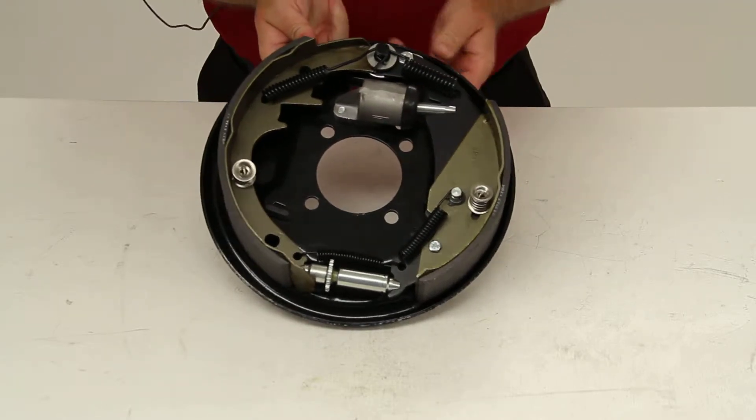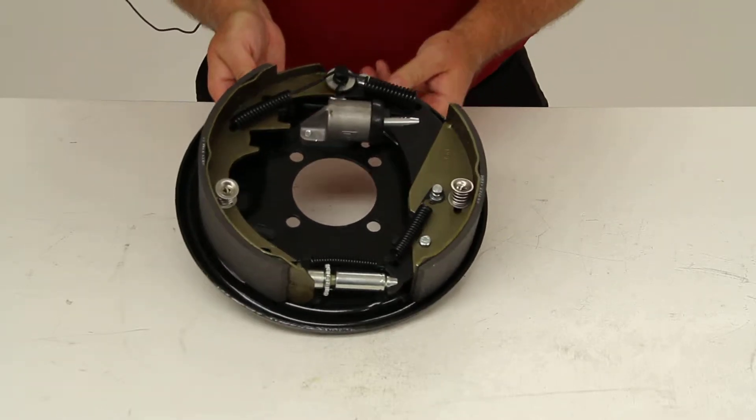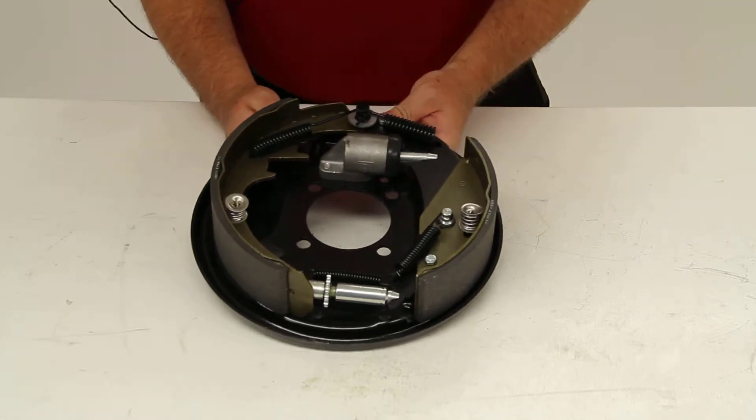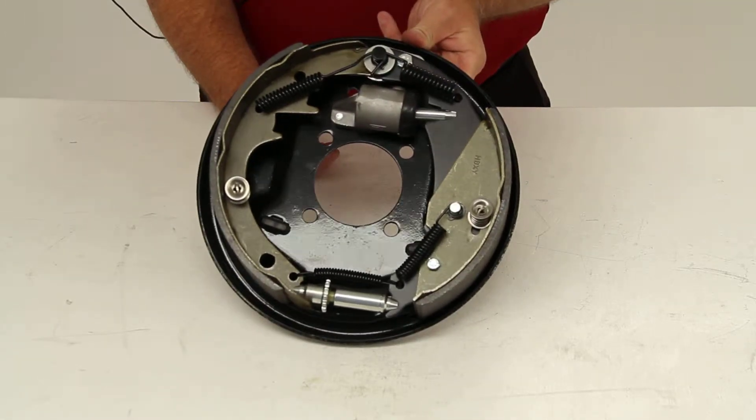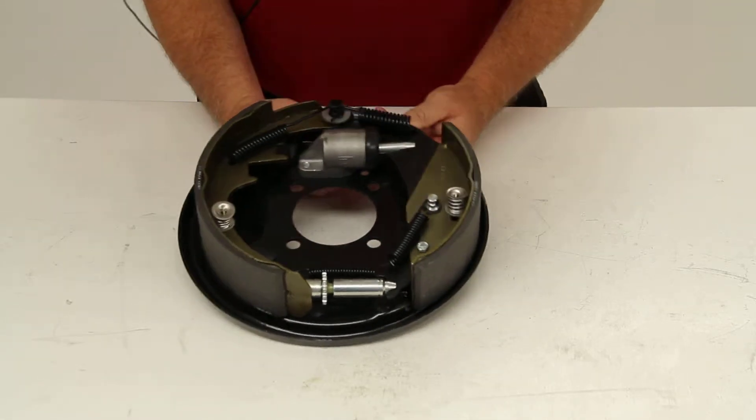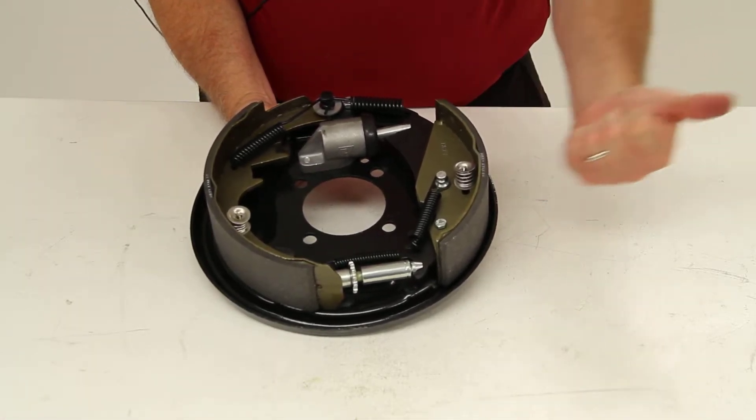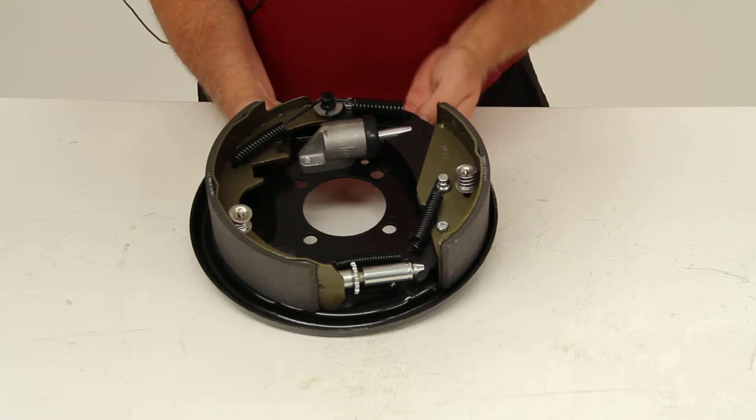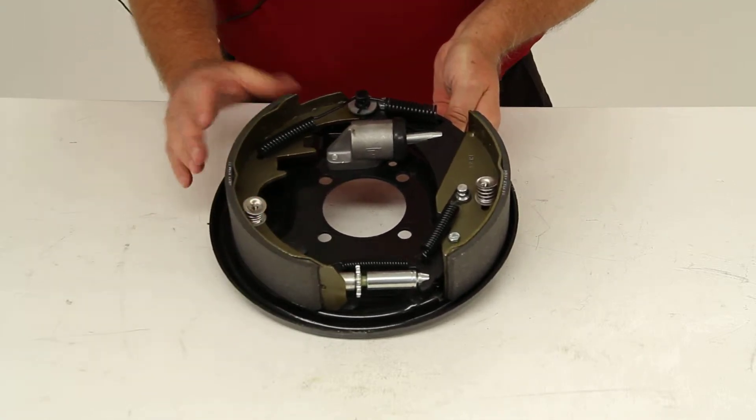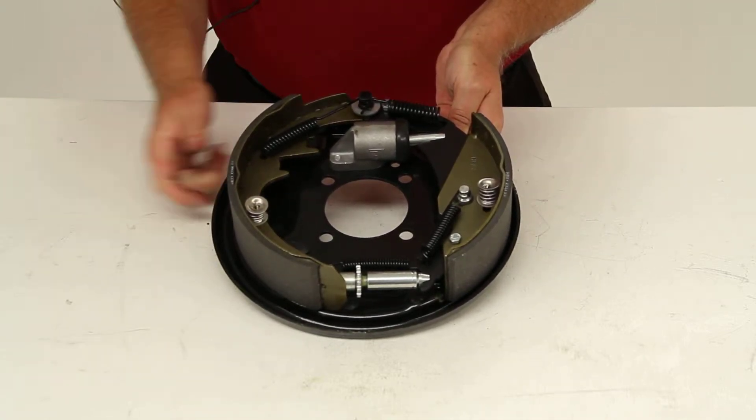This will fit most 13-inch, 14-inch, and 15-inch wheels. This is the right-hand assembly, and the way you can tell is the smaller shoe will usually face the front of the trailer, and the larger shoe will face the rear of the trailer.